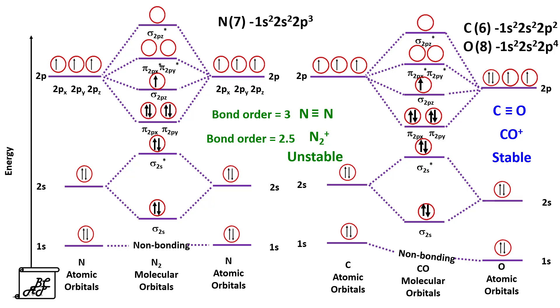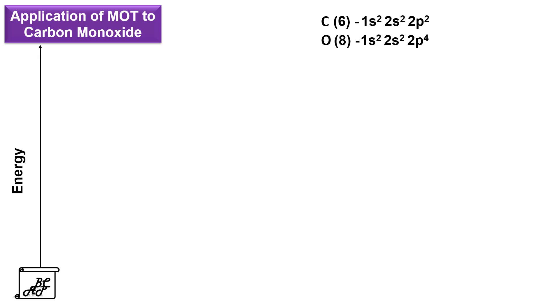So let's apply molecular orbital theory to the carbon monoxide molecule. Carbon has atomic number 6 with electronic configuration 1s² 2s² 2p². Oxygen has atomic number 8 with electronic configuration 1s² 2s² 2p⁴.